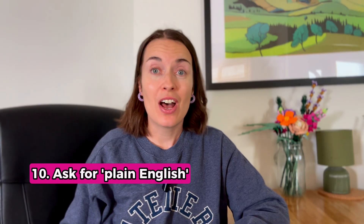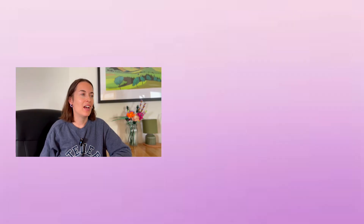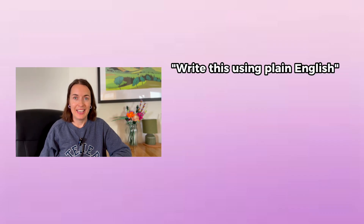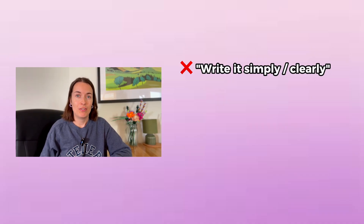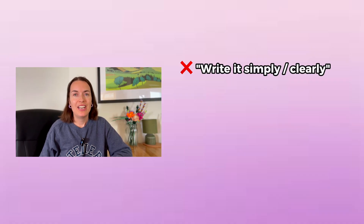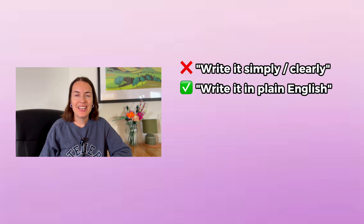The next tip for getting better responses from AI is to ask it for plain English. Plain English isn't just about simplicity — it's about clarity. You can say 'write this using plain English' in your prompt. Some people use 'write it simply' or 'clearly,' but that doesn't always return clear writing — it may still include jargon or overly complex vocabulary. Plain English works better because it helps you avoid that.